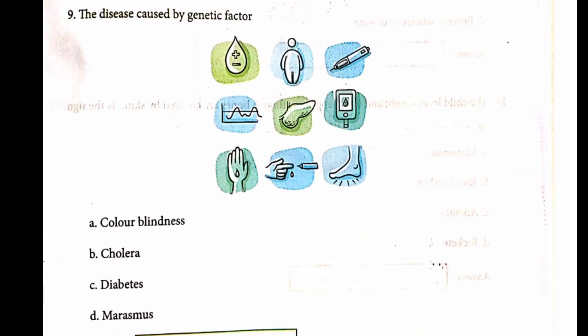Question number 8. The disease caused by genetic factors. The answer is A. Color blindness.